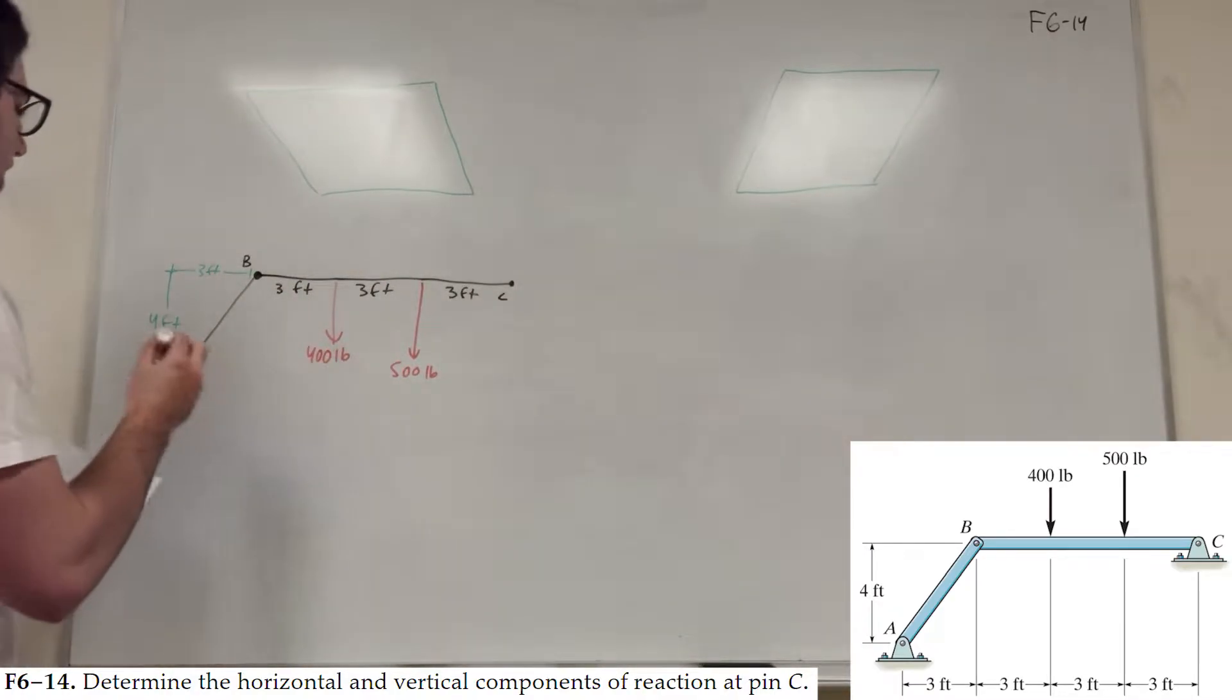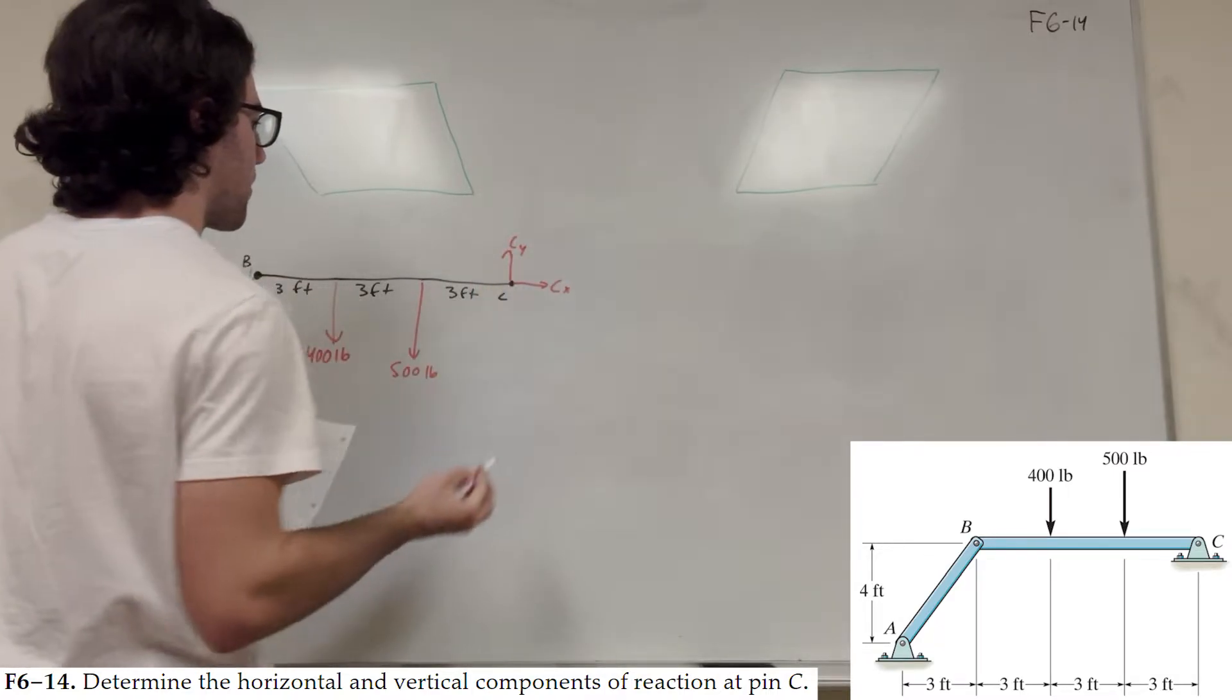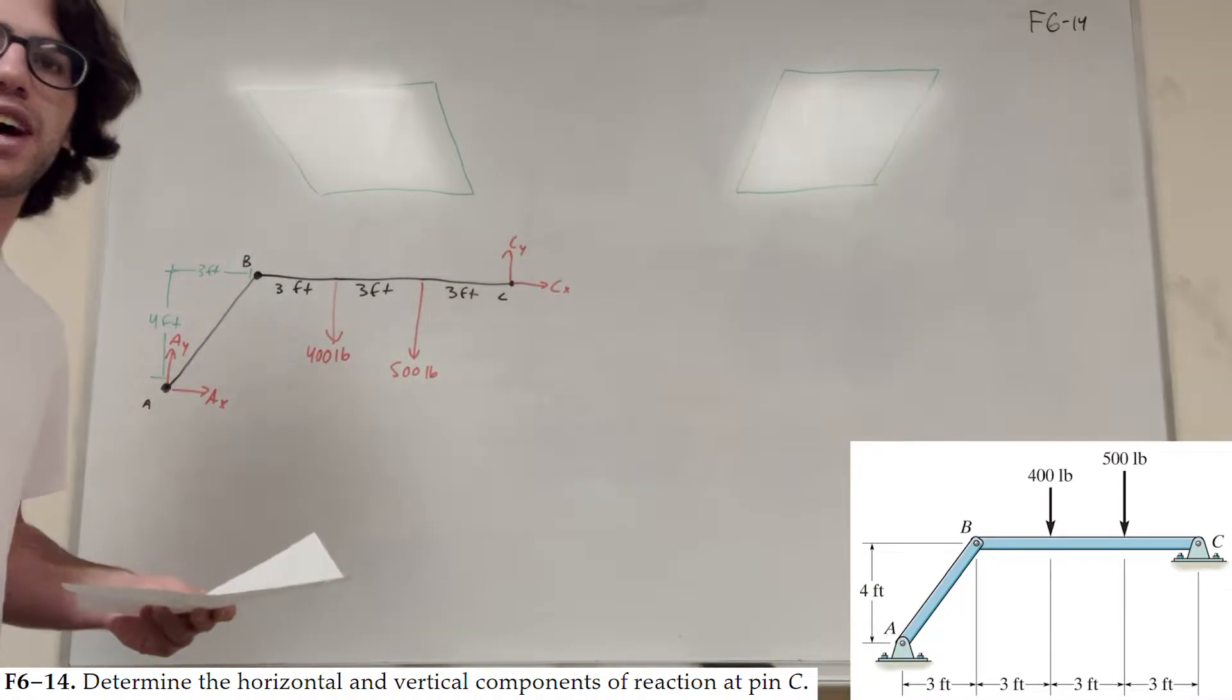So we have pins at A and C. That means there's two forces acting each way. So we have A_Y, A_X, C_Y, C_X. I just drew those in positive directions. They might or may not go that way and we're going to find out later.